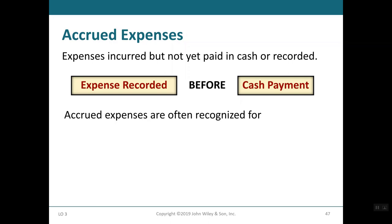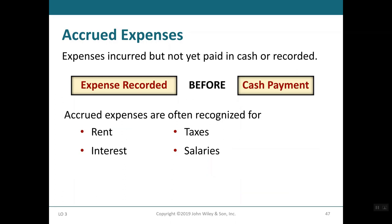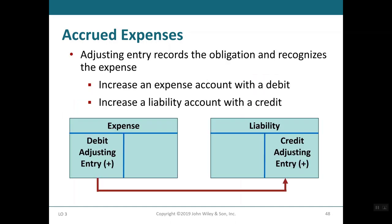Accrued expenses are expenses incurred but not yet paid in cash or recorded. They commonly arise from rent, insurance, interest, taxes, and salaries. The adjusting entry records the obligation and recognizes the expense — increase an expense account with a debit (since an increase in expenses is always a debit) and increase a liability account with a credit (since increasing a liability is a credit).